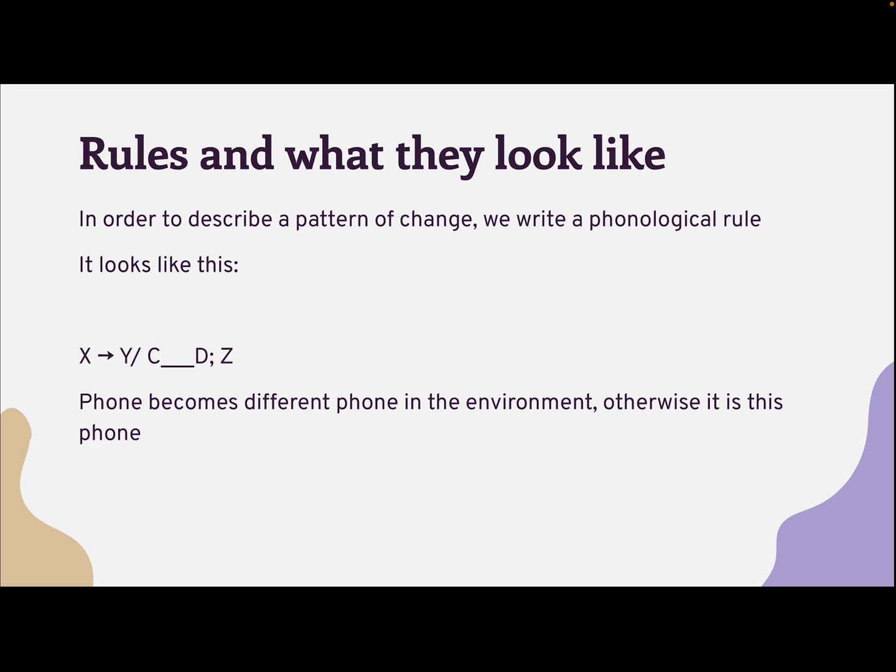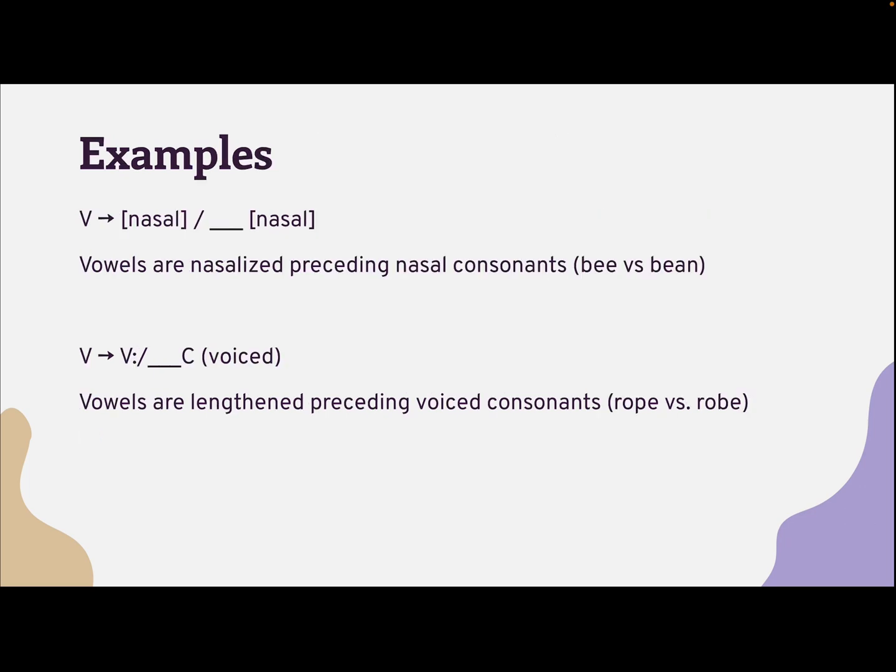Let's look at some examples to see what this means. Here is one that we've talked about before, nasalization. We saw that vowels changed when they were close to a nasal sound. They became more nasal-like. Here's how you'd write a rule for that. Vowels are nasalized preceding nasal consonants, such as when B becomes B̃. Note that this isn't just one phoneme. The rule applies to all vowels. Rules can apply to natural classes or groups of sounds. I'll also point out that we use C and V to stand for consonant and vowel.